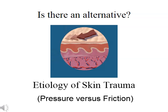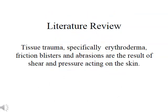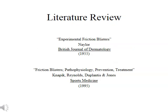Is there an alternative? There is. It is based on recognition of the current literature describing the etiology of skin trauma, and on recognition that skin trauma from mechanical forces is a dual entity. The literature review revealed that tissue trauma — specifically erythroderma, friction blisters, and abrasions — were described as being a result of shear and pressure acting on the skin. Recognition was given to the dual nature of skin trauma being a result of both shear and pressure. The current benchmark of research on shear and friction is a paper by Naylor in the British Journal of Dermatology published in 1955.